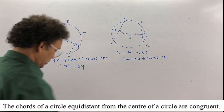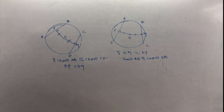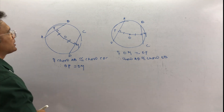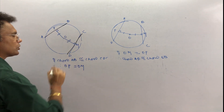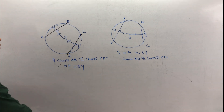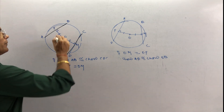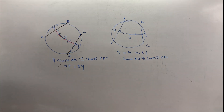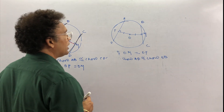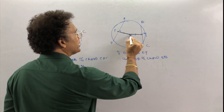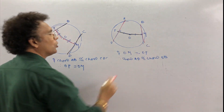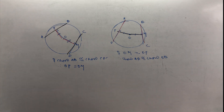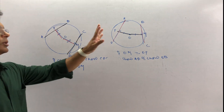In simple language: if one chord and another chord are congruent, then their distances from the center are equal. Conversely, if the distances from the center are equal, then the chords are congruent. Exercise 6.2 is based on these two theorems.